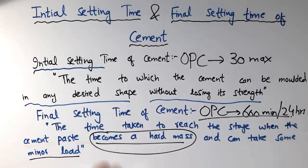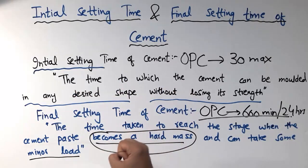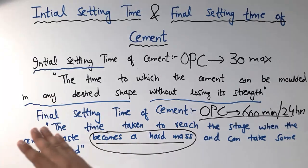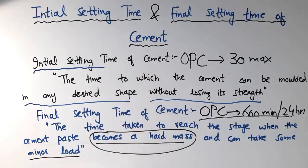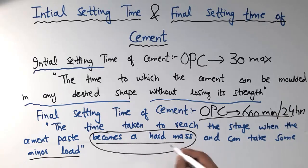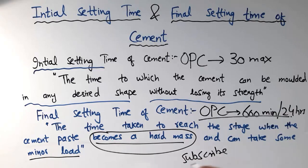To summarize: the initial setting time is the period during which we can change the cement shape without losing its strength. The final setting time runs from the start up to the point when we have a hardened cement paste that can take some load. The range between the start and the hardened cement paste stage is known as the final setting time of the cement. Don't forget to subscribe to the channel. Thank you for watching.